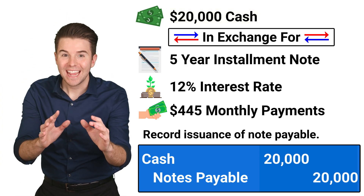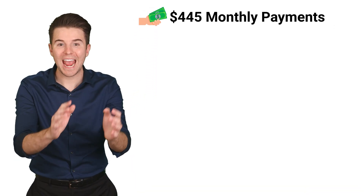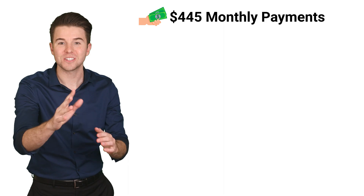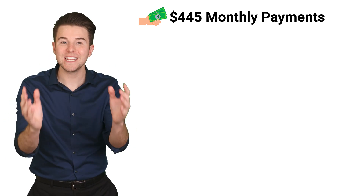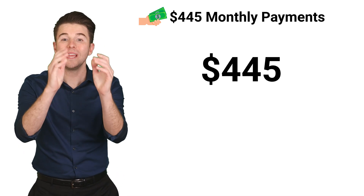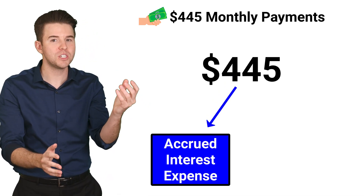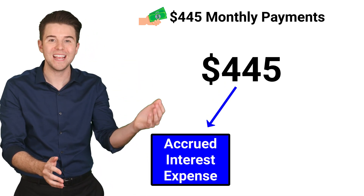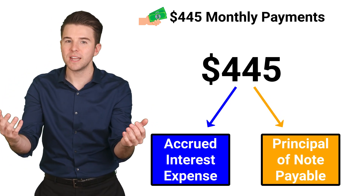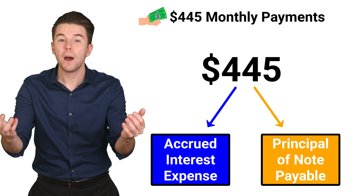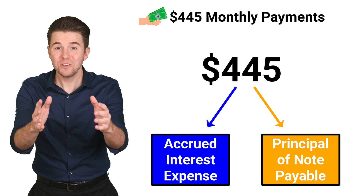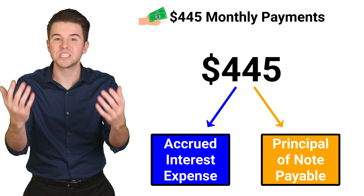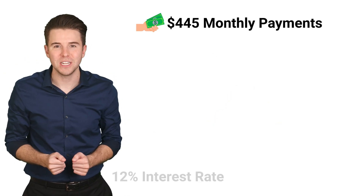Next, an installment payment is made at the end of each month for the next five years of the loan. However, when recording the monthly installment payment, we need to determine what portion of the payment goes towards accrued interest expense and which portion goes towards paying down part of the amount borrowed, or the principal of the note. To do this, we use something called an installment note amortization schedule.